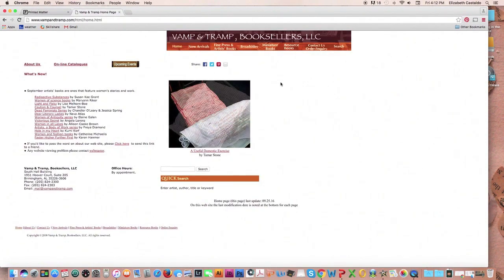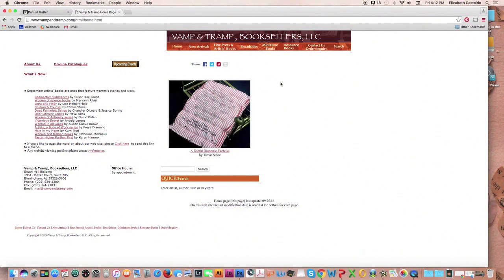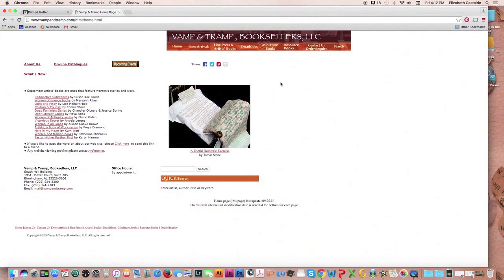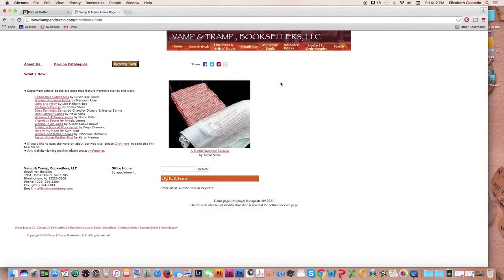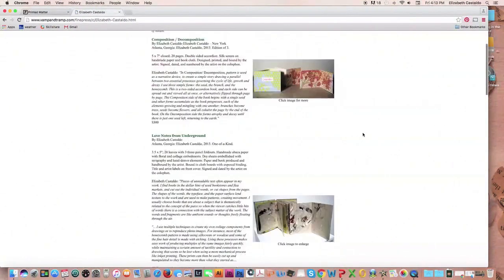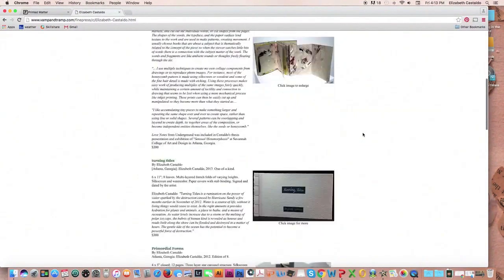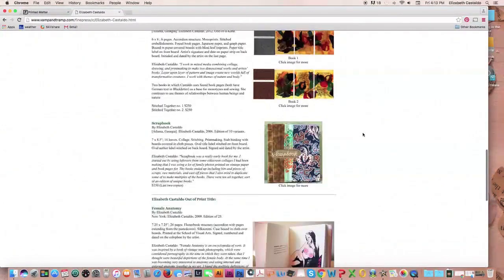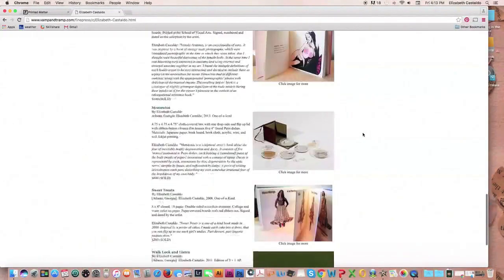Another great website to look at is the website for Vamp and Tramp booksellers. Vamp and Tramp is based in Birmingham, Alabama but they spend most of the year traveling around to different book-related and printmaking-related exhibitions and conferences and they also have a very extensive website. You can go and look here at the fine press and artist books and scroll through and see every artist that they have in their catalog.